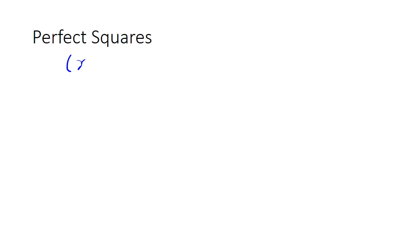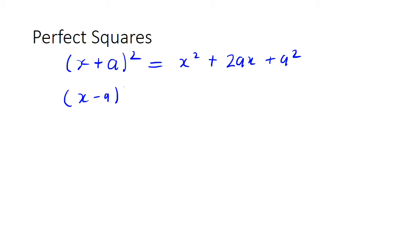Before we look at factorizing, we need to do a little bit of recap on perfect squares, which we'll use to actually do the factorization itself. Perfect squares come in a couple of forms. When we expand, we'll either have (x+a)² or (x-a)² equals x² minus 2ax plus a².